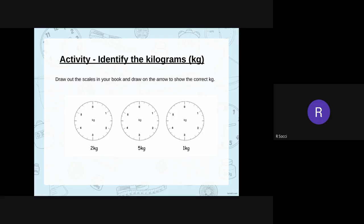The next activity, have a go if you can identify the kilogram. Now if you can print off, that's great. If you can't, don't worry. Have a go at drawing out the scales here in your books and draw an arrow to the correct kilogram. So have a look at the scales here and it's asking you to find two kilogram, five kilograms or one kilogram. Point to where you think that would go on the scales.